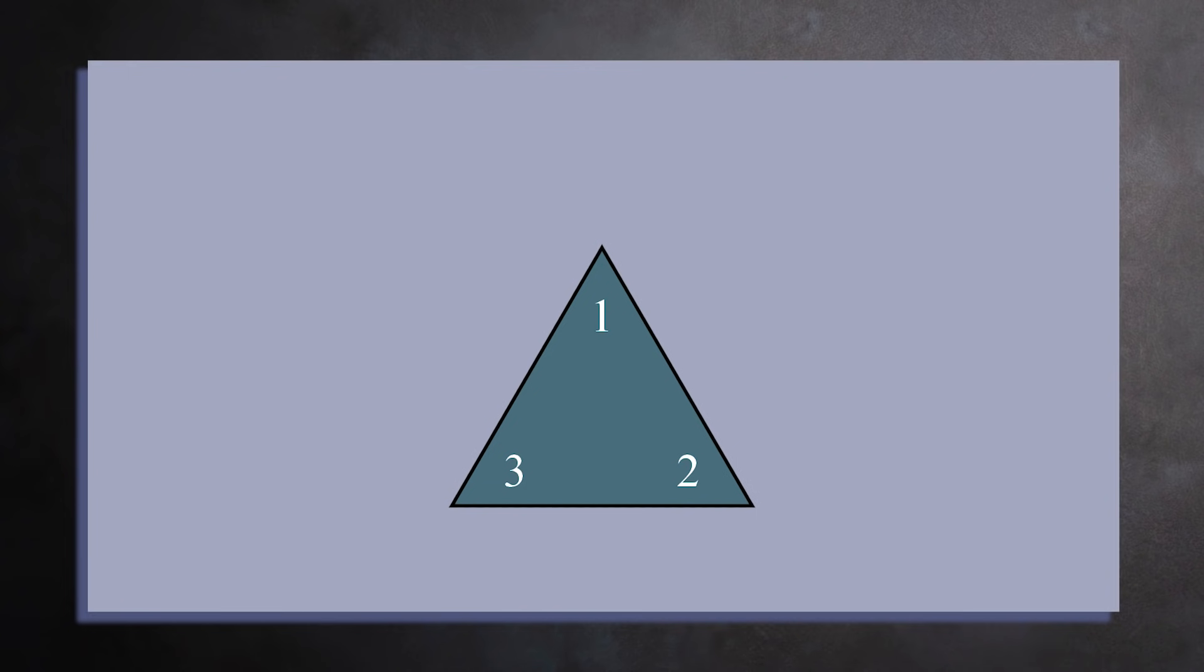You get the first transformation by picking up the triangle and setting it back down again, unchanged. We'll call this transformation one. Let's now find the other ways you can rotate and flip this triangle so that it overlaps itself. For starters, you can pick up the triangle and rotate it 120 degrees clockwise. This gives you three, one, two.